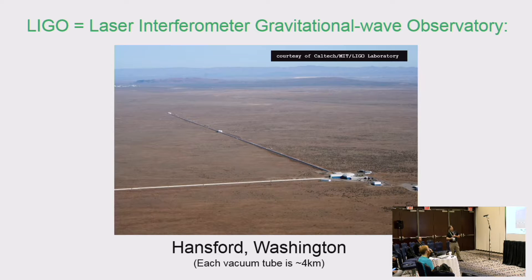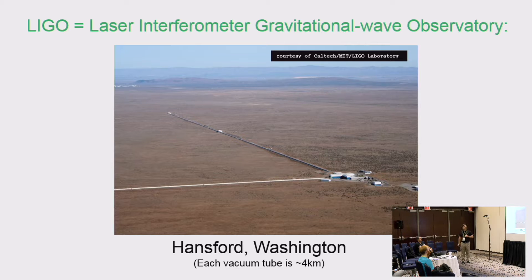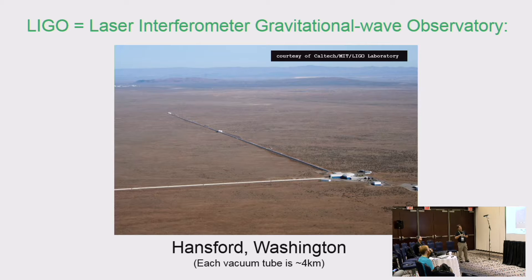Let me switch to the real world now. I've given you the mathematical background at a high level with some numbers. Here is an actual gravity wave detector — it's called LIGO: Laser Interferometer Gravitational-Wave Observatory. This is in Hanford, Washington. Each tube has a laser in it and the length of that tube — it's a vacuum tube — is four kilometers long, perpendicular arms. That apparatus is able to measure gravity waves coming from those black hole mergers here on the earth.